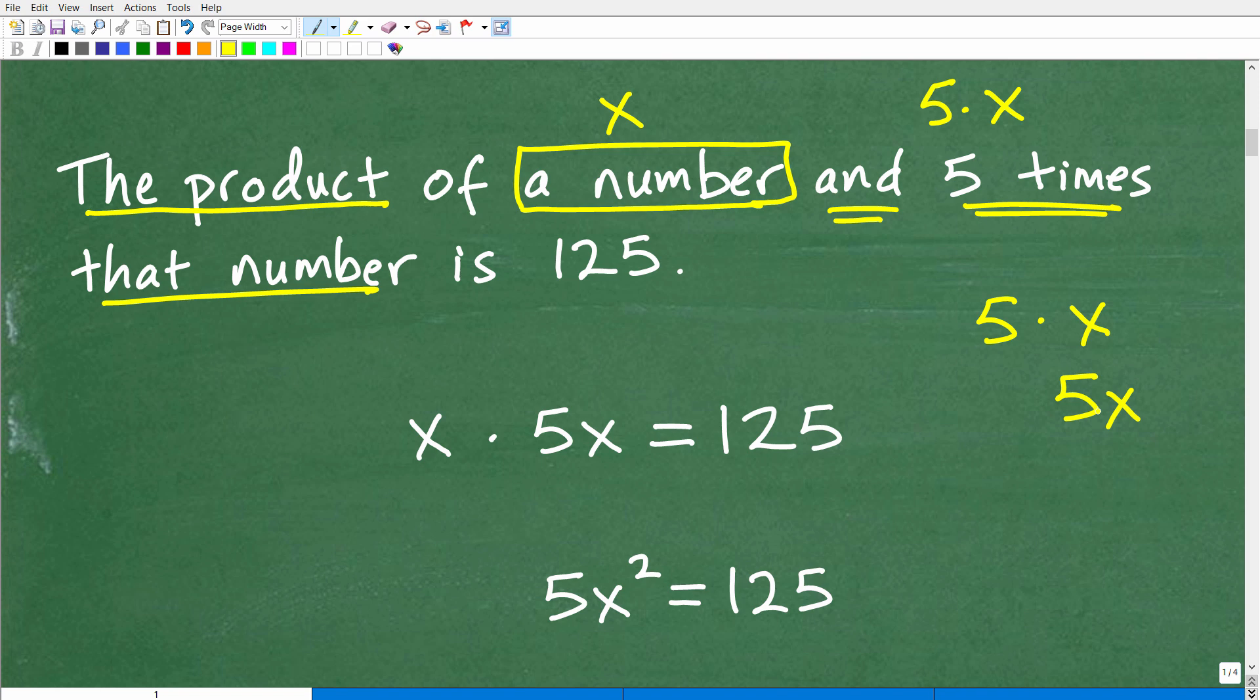Well, not just quite yet. Actually, I got a little bit ahead of myself. Let's finish reading the sentence here. Okay? So the product of a number and five times that number. So that's going to be X times five X. All right?